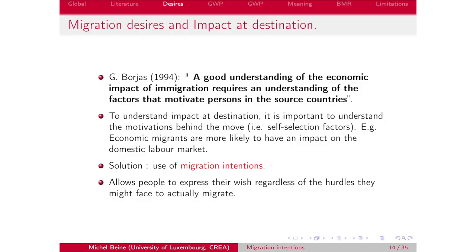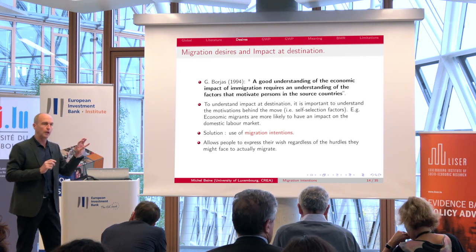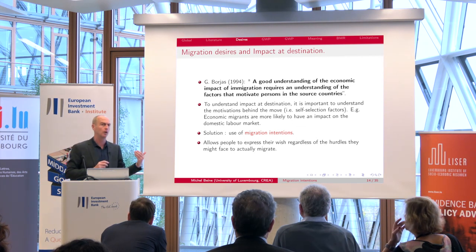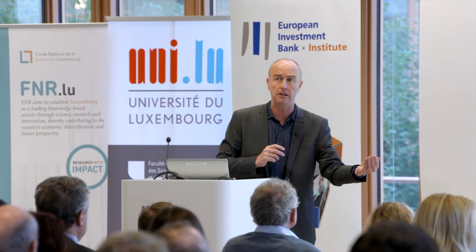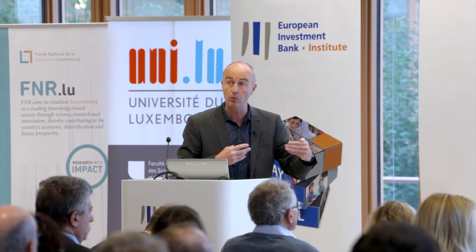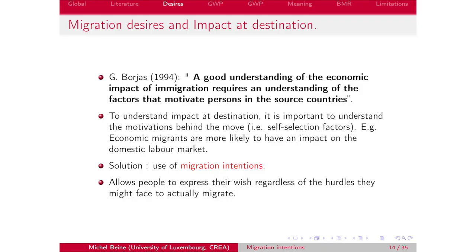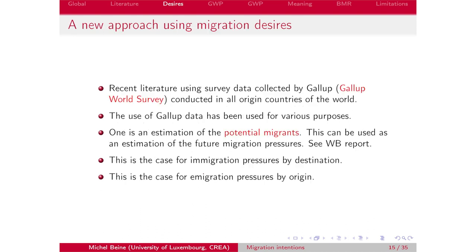The motivations might differ across different types of immigrants, but knowing that they had an economic motivation is key to understanding their impact in terms of wages, employment, and so on. We face an issue: we would like to look at the role of self-selection factors, but if we use actual migration flows it is very difficult to estimate or identify that role. Today I would like to emphasize that we have, hopefully, one solution — which is to use a new type of data: migration aspirations, or migration intentions.